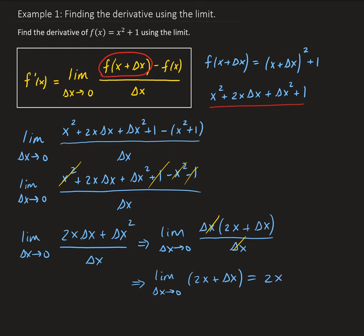It's important to understand that you're taking the limit as delta x goes to zero — not x approaching zero, but delta x approaching zero. This leaves us with the value 2x. Therefore, 2x is the derivative of our function. That's how you find the derivative of a function using the limit definition.